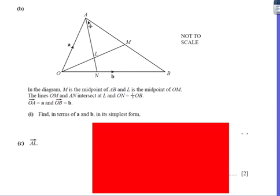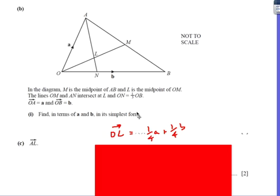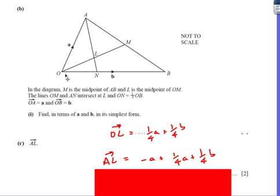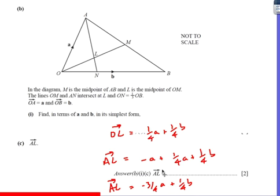Okay, and then the very last one, let's get from A to L. Okay, so I need to start at A, finish at L. Well, again, I can use what I've already done. Basically, if I go from A down to O, and then I can use the vector OL that I've just worked out, that will start at A and finish at L. So, basically, I already know that OL is a quarter a plus a quarter b, and therefore AL, I just need to do minus a plus a quarter a plus a quarter b. And then if I simplify that, I'm going to get minus three quarters a plus one quarter b. Okay, there we go.